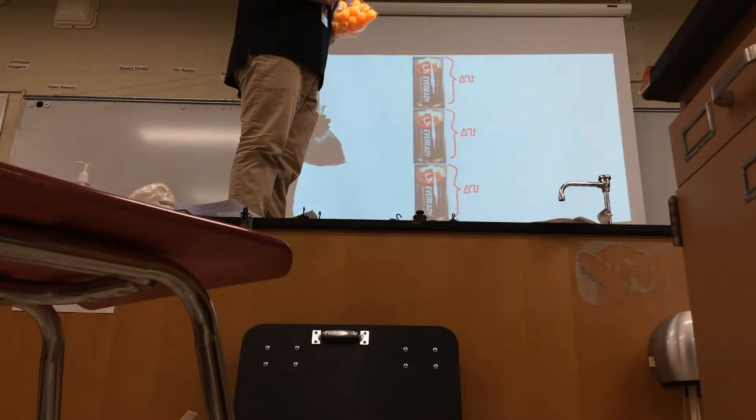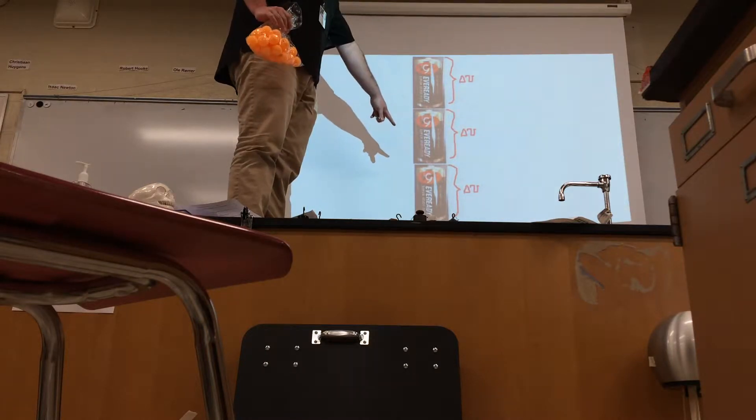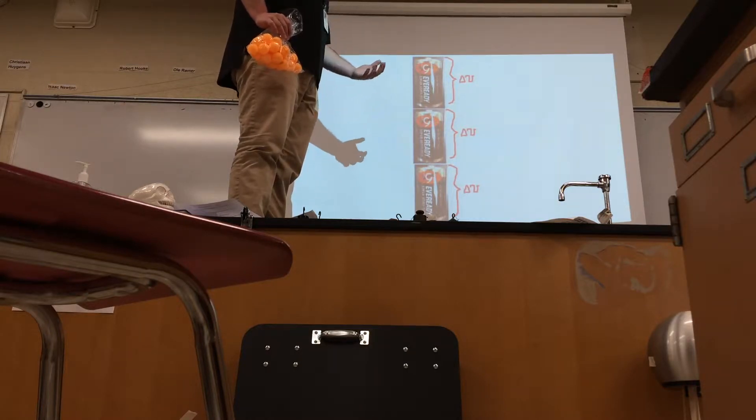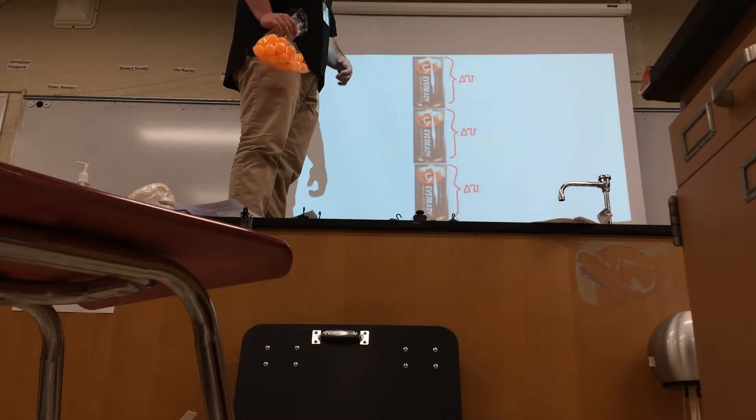Remember, electric potential or voltage is the energy per charge, per coulomb of charge. Each of these has 1.5 volts. That means for every coulomb of charge that is transferred, we get 1.5 joules.